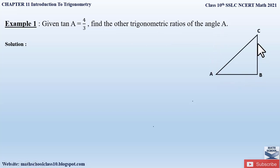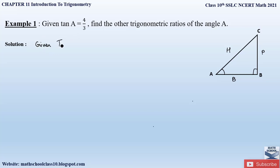First, let us draw a triangle and name it ABC. Since they have given us the value of tan A, angle A forms the acute angle at which we find the trigonometric ratios. In right triangle ABC, side opposite B is the hypotenuse. The side opposite to angle A is BC, which becomes the perpendicular or opposite side, and AB becomes the base or adjacent side.